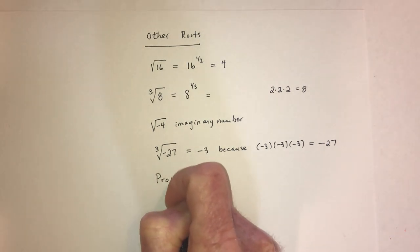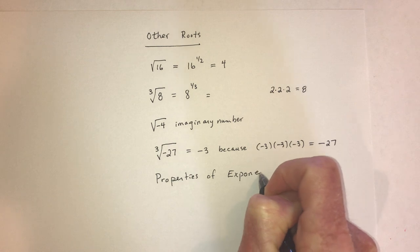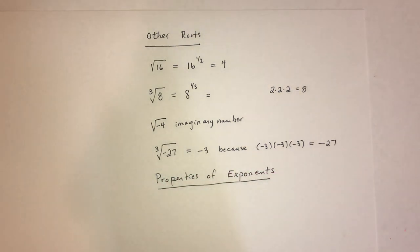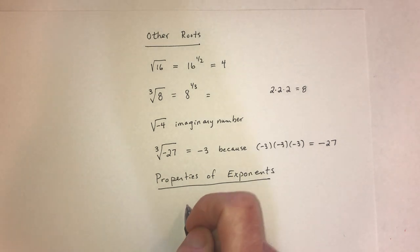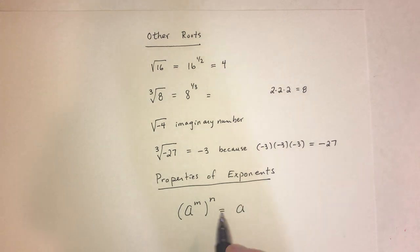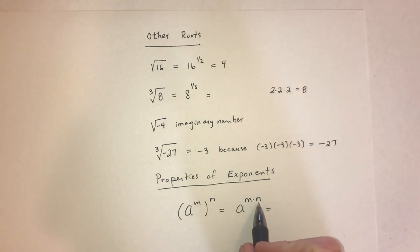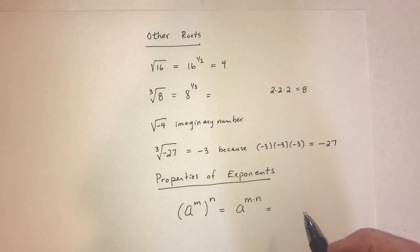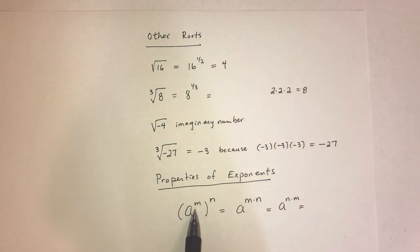Now, on to the property of exponents. The property is: if you have something raised to a power, and then that result is raised to another power, you multiply the exponents. And because multiplication is commutative — 3 times 4 equals 4 times 3, both equal 12 — you can switch the order of the exponents.